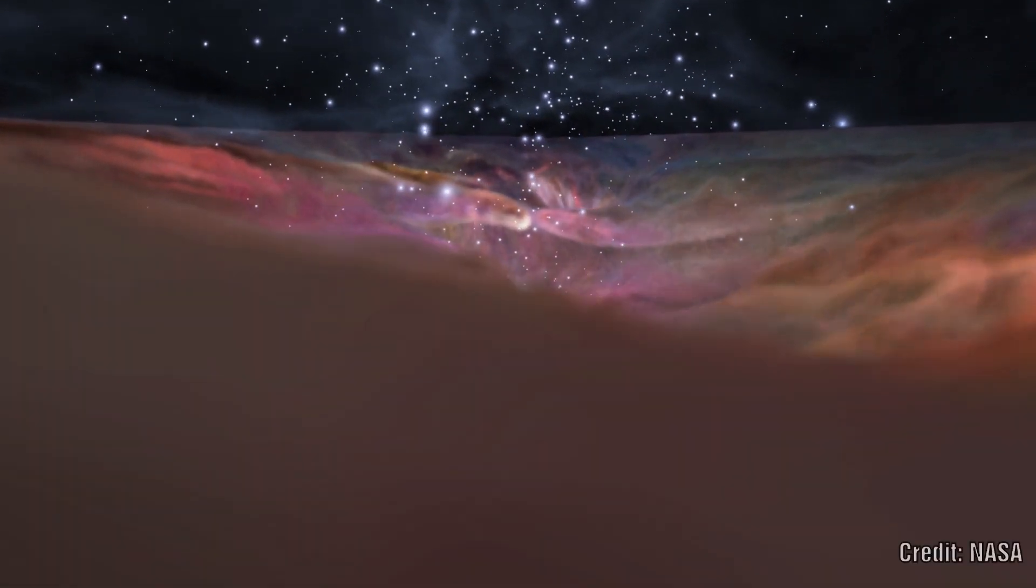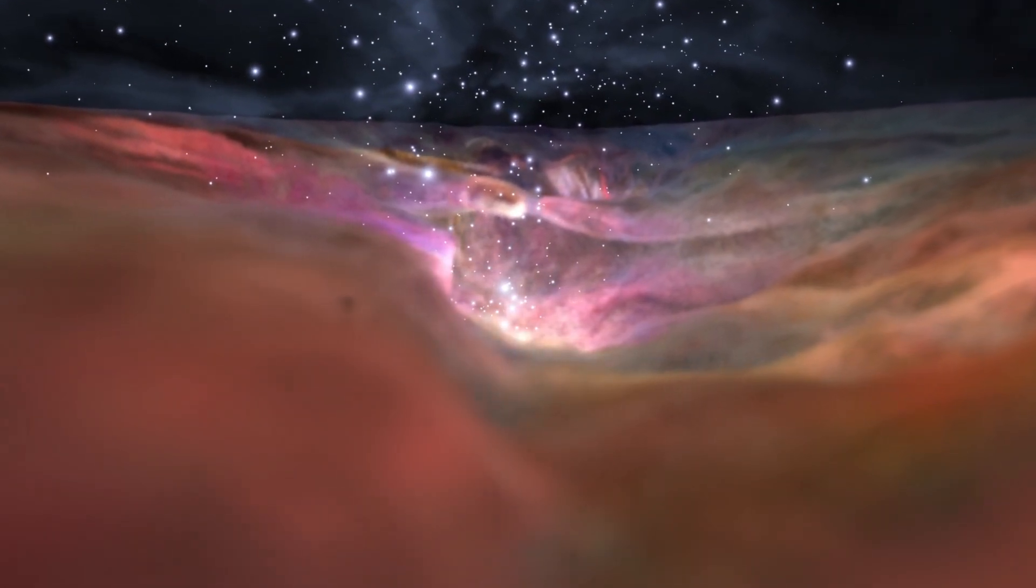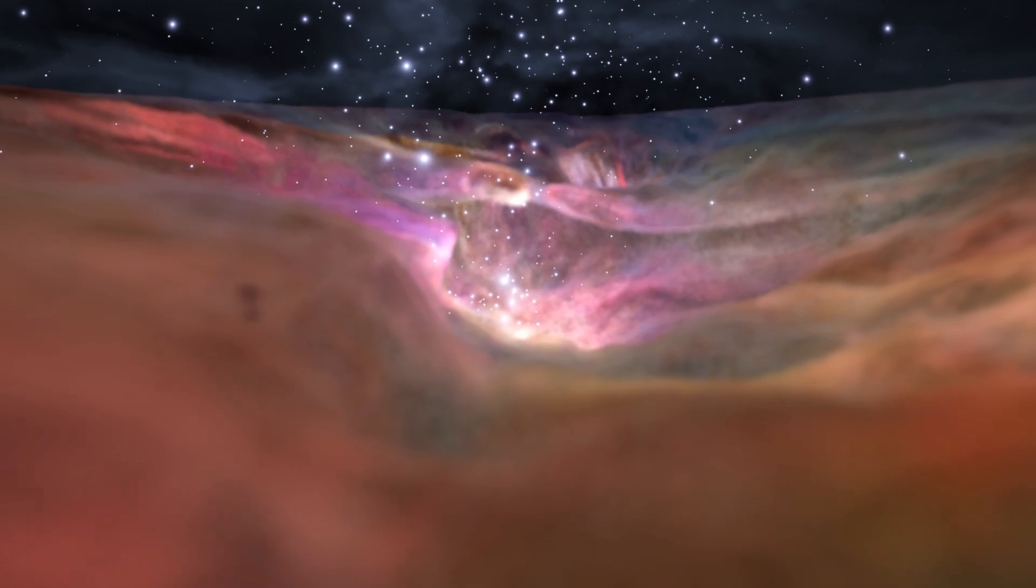From this they identify that the galaxies in the cosmic noon have more ionized nitrogen and oxygen compared to hydrogen than the lower redshift counterparts.